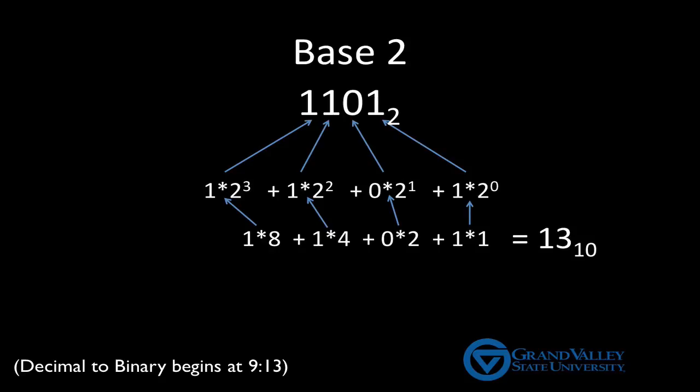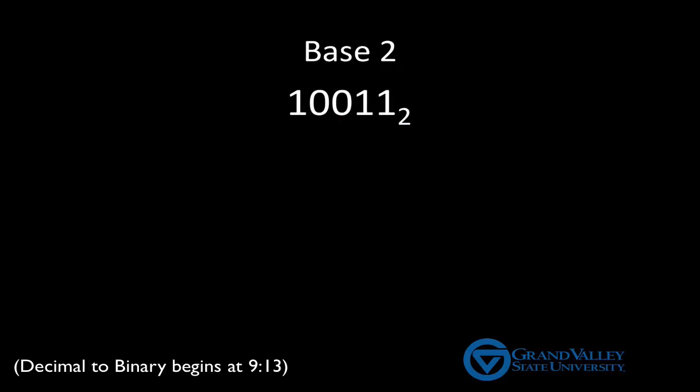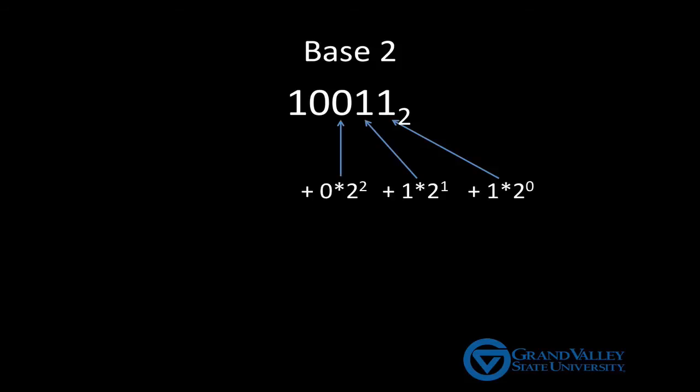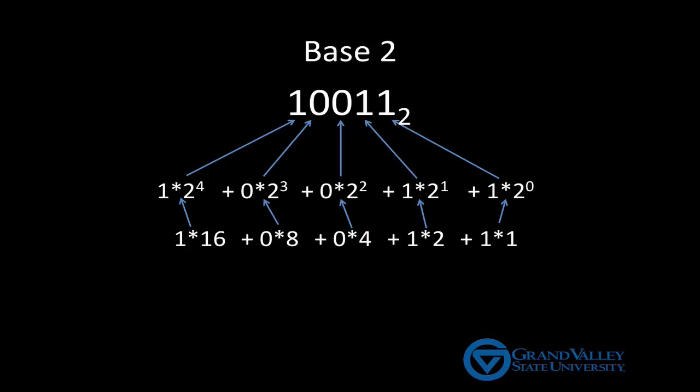Alright, let's try it again with a slightly longer number. Again, right to left, this means 1 times 2 to the 0 power plus 1 times 2 to the 1st power plus 0 times 2 squared plus 0 times 2 cubed plus 1 times 2 to the 4th power. Or expand it out, 1 times 1 plus 1 times 2 plus 0 times 4 plus 0 times 8 plus 1 times 16. We add this all up, and we see that this binary number is the same as 19 in base 10.